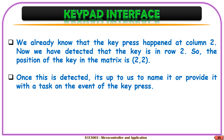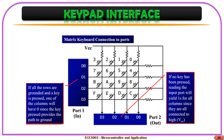We get C2 as the key pressing from the matrix. The position of the matrix from the key is identified as 2,2. Once we detect this, our objective is to go into the lookup table and from the lookup table identify which key is being pressed.